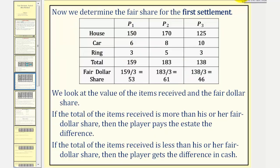Now let's determine each player's fair share for the first settlement. Remember, to find the fair share for each player, we sum their bids and divide by the number of players. So for player one, the sum of the bids is 159 divided by three is 53. Therefore, player one's fair share is $53,000.